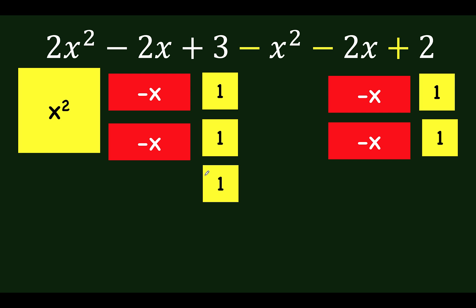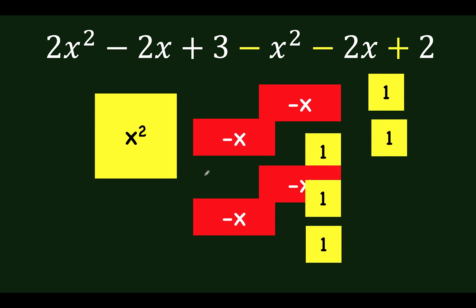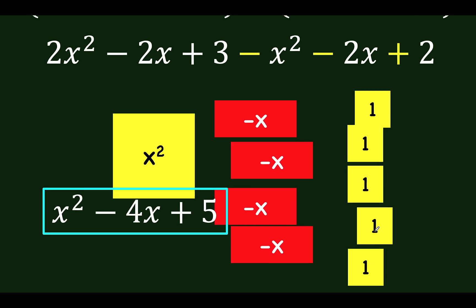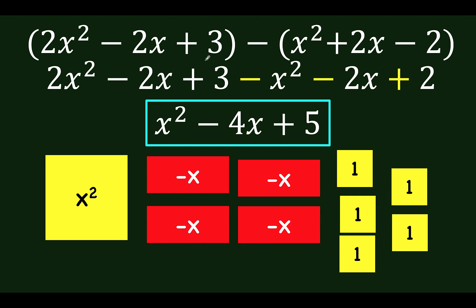So let's empty now our trash can and rearrange so that like terms are together. So from here, the final answer is we have 1x squared, we have 4 negative x, and we have 5 positive ones. So this is now the answer to this original problem.